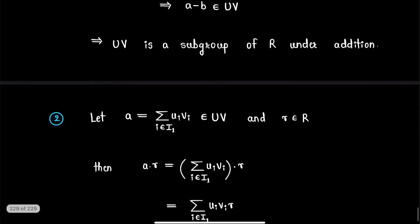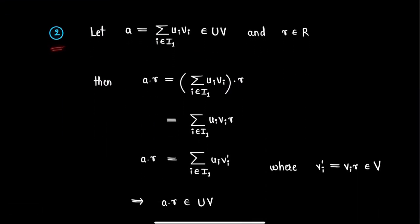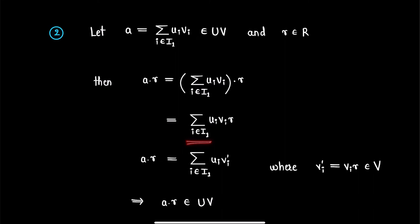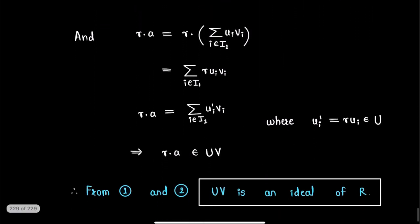For step two, let a equals summation u_i v_i for i in index set i1 be an element from the set UV, and let r be some arbitrary element from ring R. Then a·r equals (summation u_i v_i for i in i1)·r, which equals summation u_i (v_i · r) for i in i1. Therefore a·r equals summation u_i v_i' for i in i1, where v_i' = v_i · r is an element from ideal V. Therefore a·r is an element from set UV.